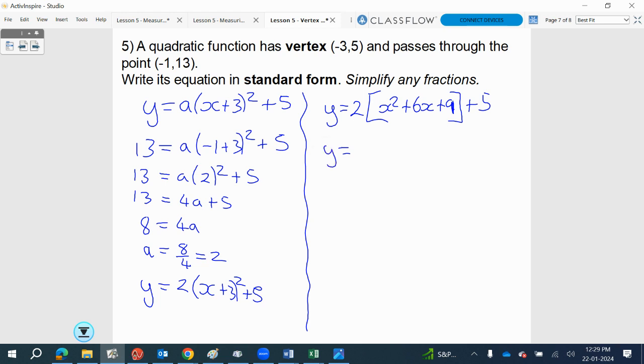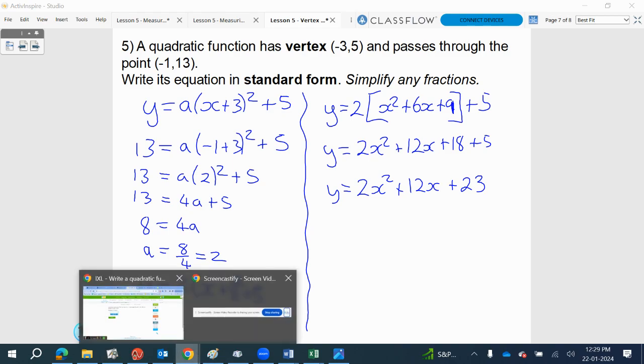Now we need to bring the 2 in. So this is going to give 2 times x squared, 2 times 6x, 2 times 9, plus 5. And then 18 plus 5, 2x squared, plus 12x, and that is plus 23. And this is our final answer. Alright, that's it for today. Have a go with the ixcels.